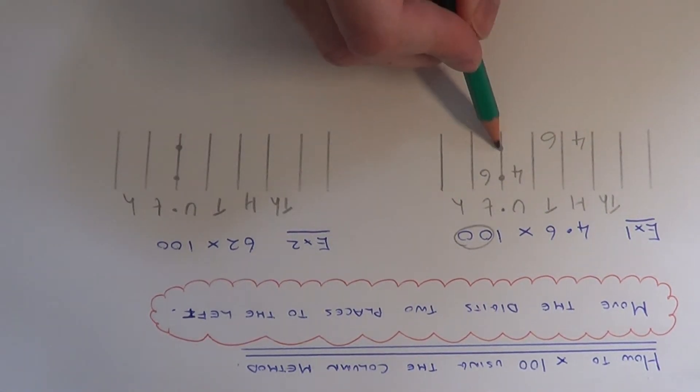The decimal point doesn't move; it stays in line. If we have any gaps between the decimal point and your numbers, we need to fill the gaps in with zeros.